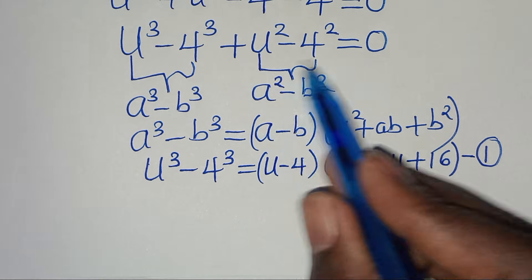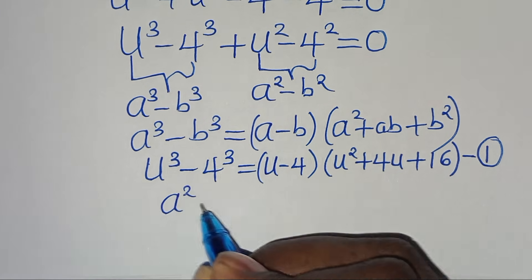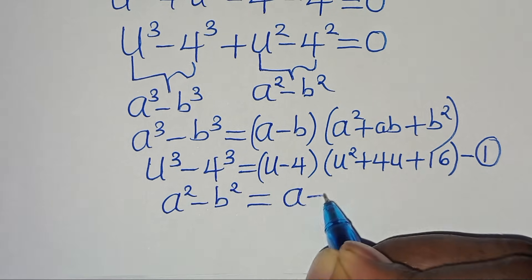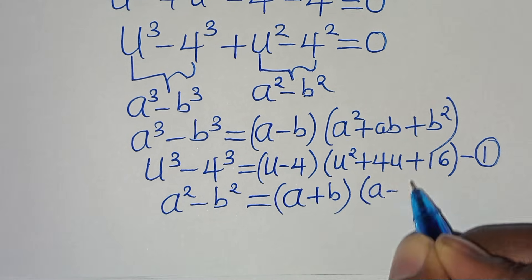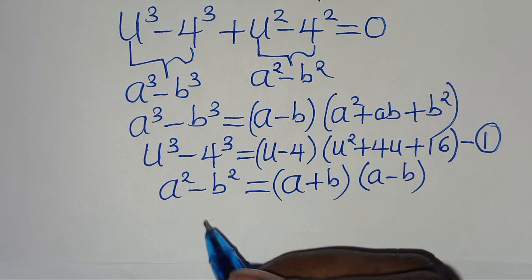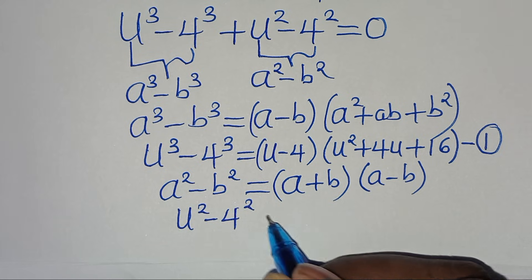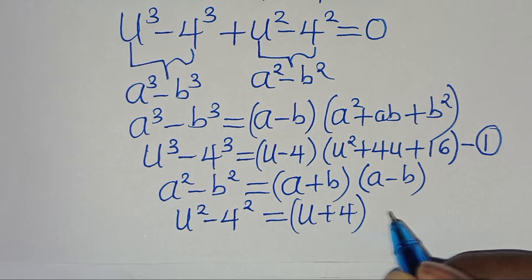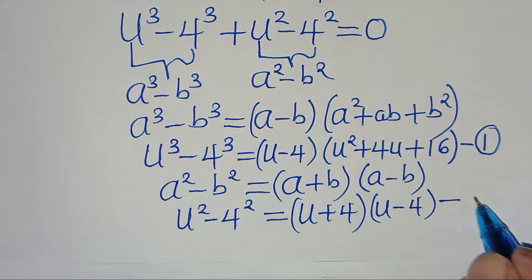The second part is the difference of two perfect squares, that is a squared minus b squared, which you can express as a plus b multiplied by a minus b. So u to the power of 2 minus 4 to the power of 2 becomes u plus 4 multiplied by u minus 4. Let's call this equation 2.